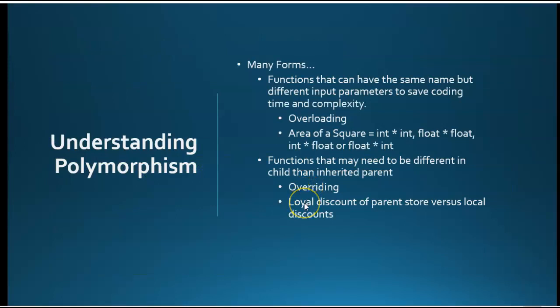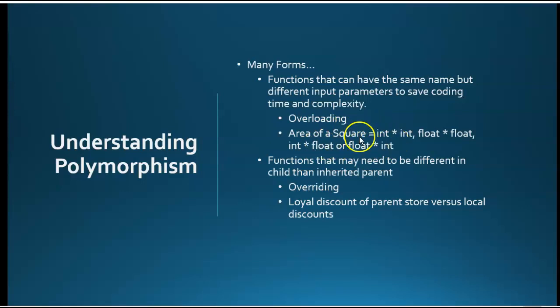Polymorphism is a little tough right now — it's actually pretty straightforward, but it's hard to explain unless I show you code. There are two concepts in polymorphism you're going to be responsible for: overloading and overriding. Overloading is when we create multiple methods with the same name but different parameters. For example, if I'm doing area of a square, I could have two integers, two floats, an integer and a float, or a float and an integer — all those combinations would give me the area of a square. I'd create one method called square but with four different parameter lists.